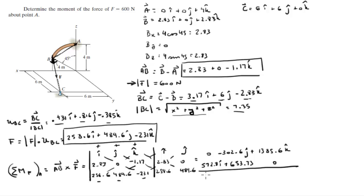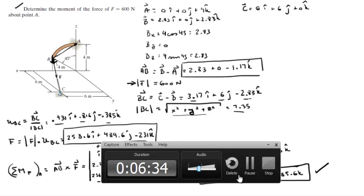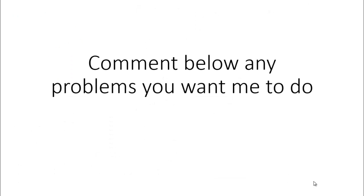So when you add this together, you get that the vector for the moment comes out to be 572.8 I plus 351.13 J plus 1385.6 K. Final answer for the moment that F creates about A. Please comment below if you want me to do any problems and I'll be happy to help. Thank you.